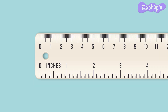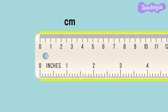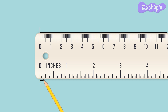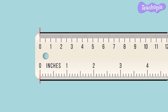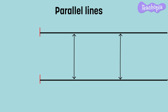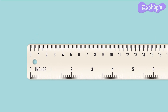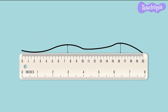Scales have two different measurement units marked along its two edges. One edge of the scale is marked in cm and the other edge in inches. The edges can be used to measure length in the corresponding units. With the help of the edges of a scale we can also draw parallel lines. A scale can also be used to check if a curve has a straight portion or not.